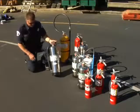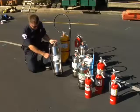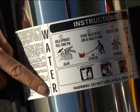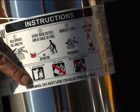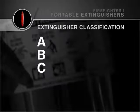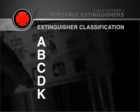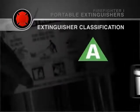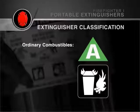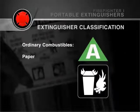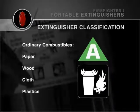The classification of fire extinguishers corresponds with the five classes of fire: A, B, C, D, and K. Class A fires involve ordinary combustibles such as paper, wood, cloth, and many plastics.